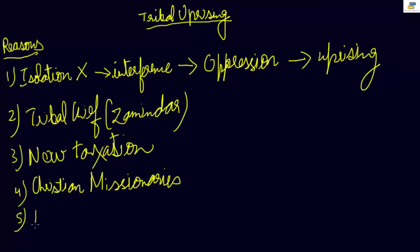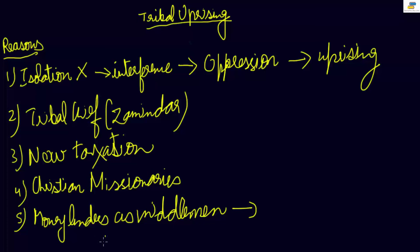Money lenders and traders came as middlemen. These middlemen started exploitation, and these are outsiders.